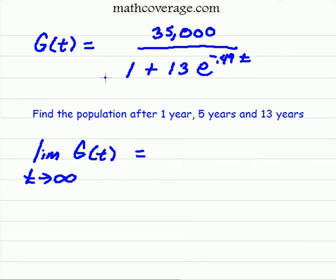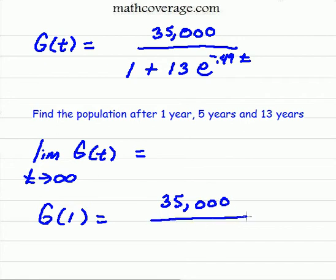And so we just find g of 1, which means we just plug 1 directly in. And so we end up having 35,000, just rewriting everything here, over 1 plus 13e to the negative 0.49 times 1. And we get that.